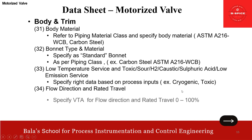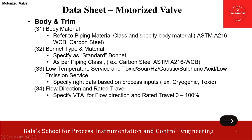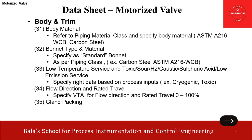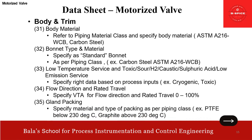Flow direction and rated travel: flow direction should come from the vendor based on the calculation — specify VTA for flow direction. Rated travel, as we all know, is 0 to 100%. There is also a gland packing requirement. Specify the material and type of packing as per the piping class. For example, if it is below 230 degrees, we can go with PTFE. If it is more than 230 degrees, then we prefer graphite.